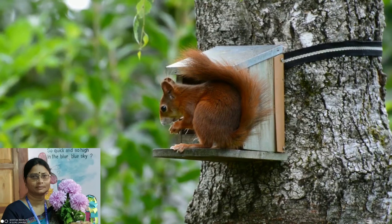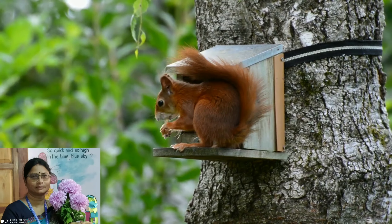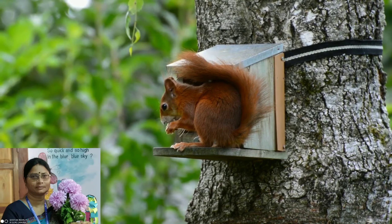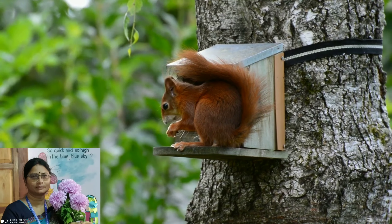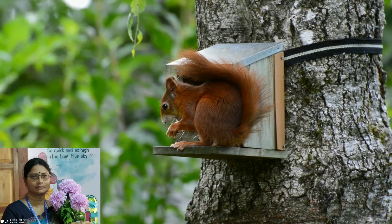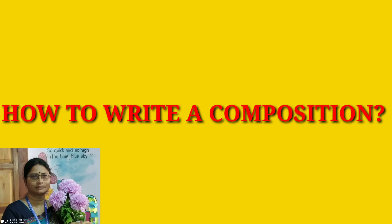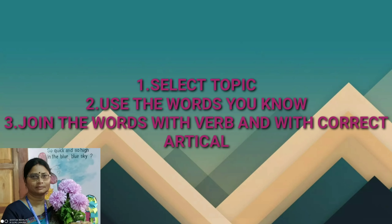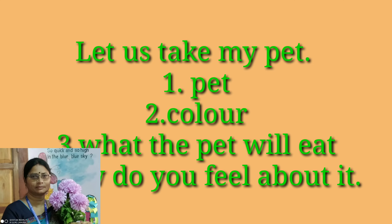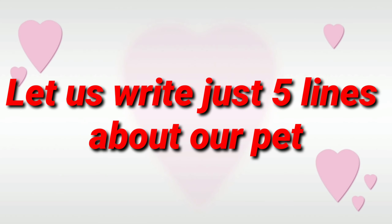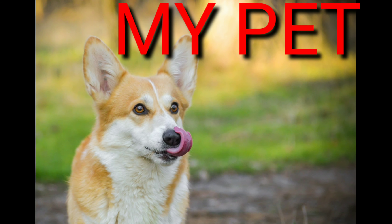You also mention how many brothers and sisters you have. That's how you introduce yourself by writing three or four lines. To write a composition, select a topic, use the words you know, and join the words with correct sentences. Let us take 'My Pet' as the composition topic. You have to observe three things: what is the pet, and what the pet likes.